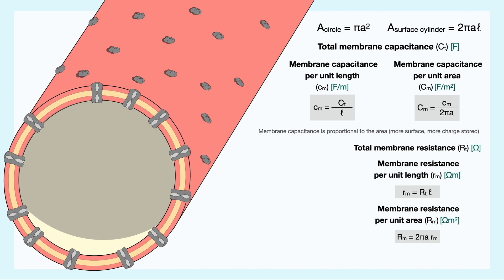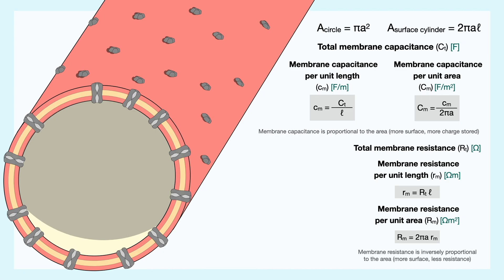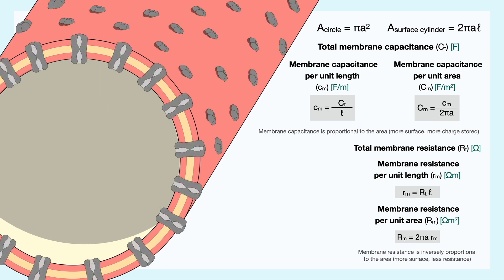This is because resistance is inversely proportional to the area, and thus increasing the area reduces the amount of resistance because with a larger membrane there are more channels that ions can take to flow out of the cell.